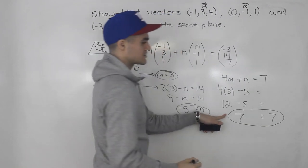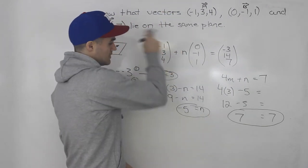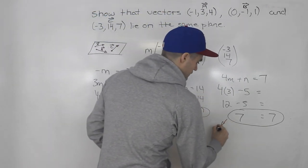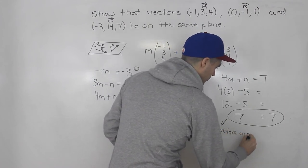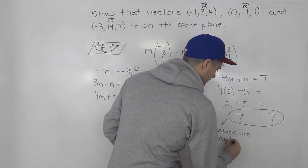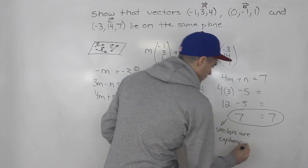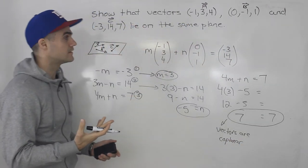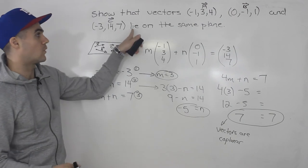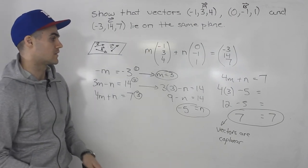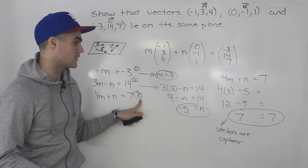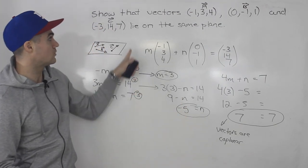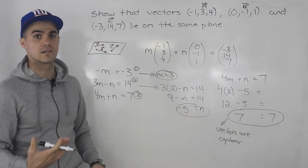And because this holds here, it means the vectors are coplanar. Or they span a plane in R3, or they lie on the same plane. So because we got to this point here, where these constants held with the third equation, we showed that the three vectors lie on the same plane.